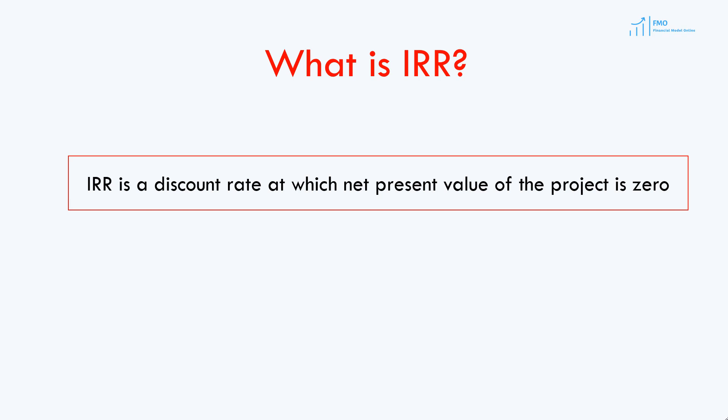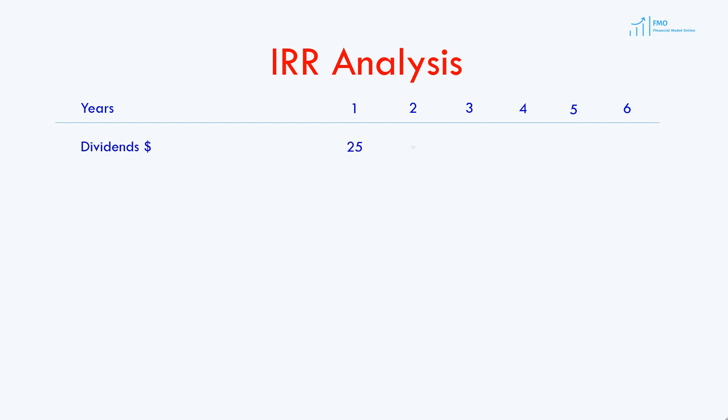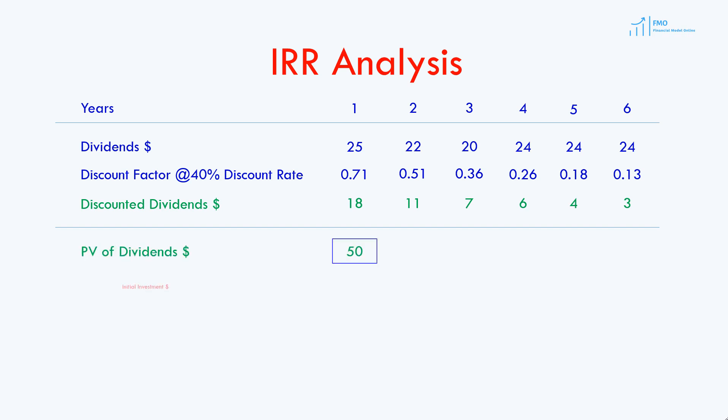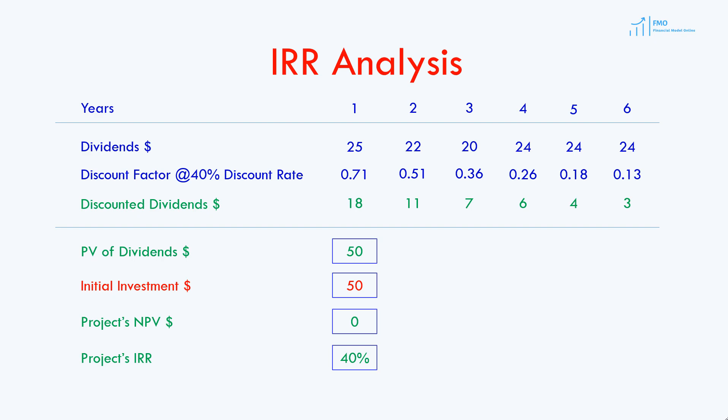If the project's IRR is larger than the required rate of return, or hurdle rate, the investment is worthwhile. Going back to our simplified valuation case, let's assume our discount rate is 40%. Based on that, we calculate our discount factors, then calculate the discounted dividends and the present value of those dividends, which equals 50. Our initial investment is also 50, so the net present value is zero. Since IRR is defined as the discount rate at which NPV equals zero, the 40% discount rate is the internal rate of return of this project.